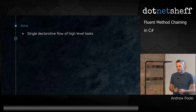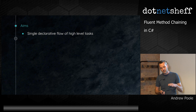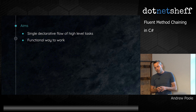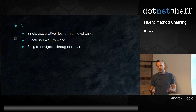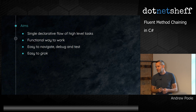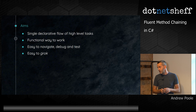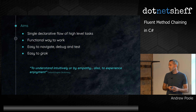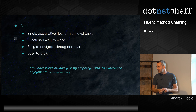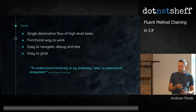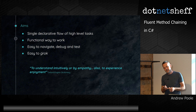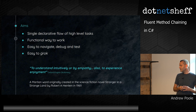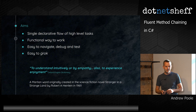All of this gave us a set of aims. We wanted to declaratively define a flow of tasks in a single place, pushing the complexity down to keep the top level nice and clear. We wanted to maintain some of that functional way to work. We wanted whatever we had to be easy to navigate, debug, and no harder to test than anything else. And in a word: easy to grok. It's a really old word — its definition is 'to understand intuitively or by empathy' and also 'to experience enjoyment.' It's actually the only word in the English language derived from Martian, coined for the novel Stranger in a Strange Land in 1961.